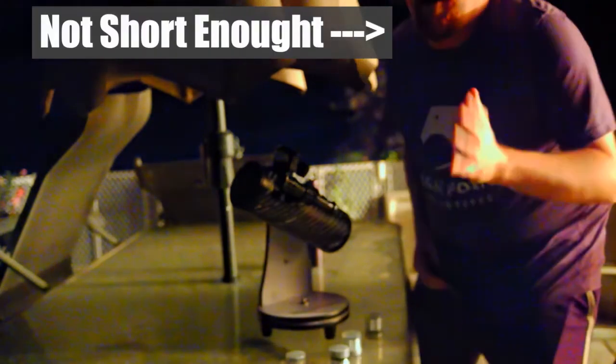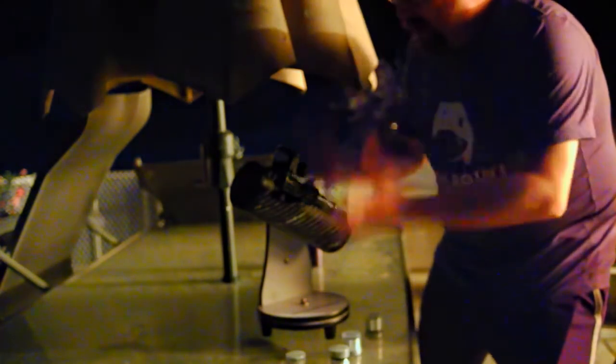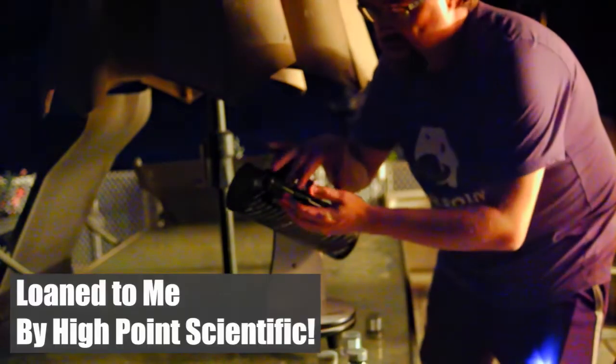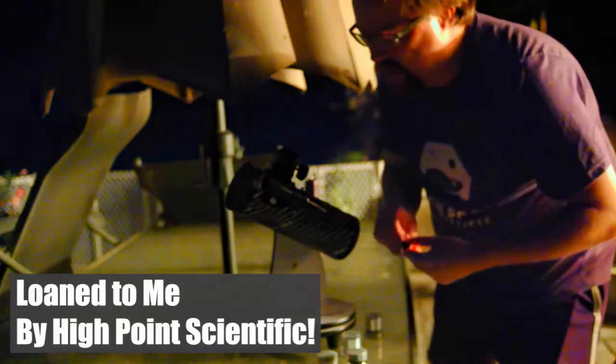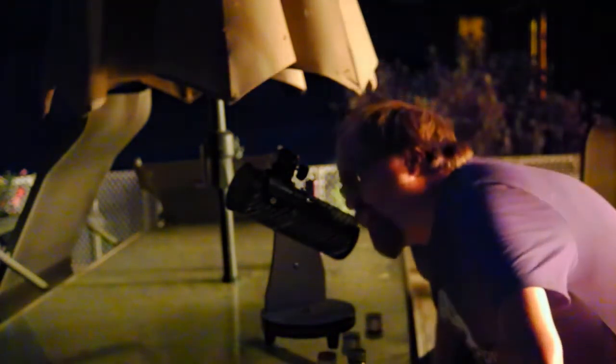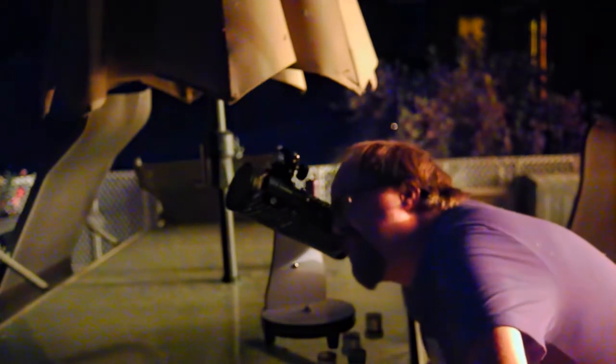So here we are with the first scope. I'm just going to put it here on the table. I have the optical finder scope here. I'll take the caps off. Now I can look through it. Sitting on the table, maybe not the best way of doing this, but it does give me a bit of view.